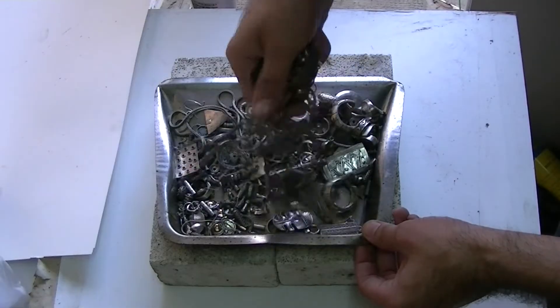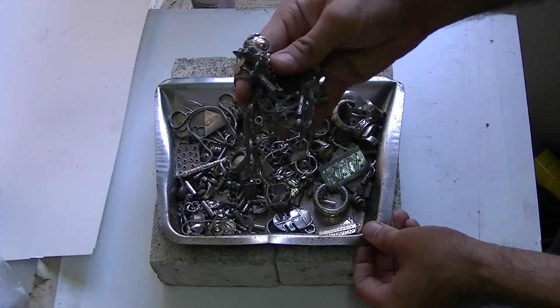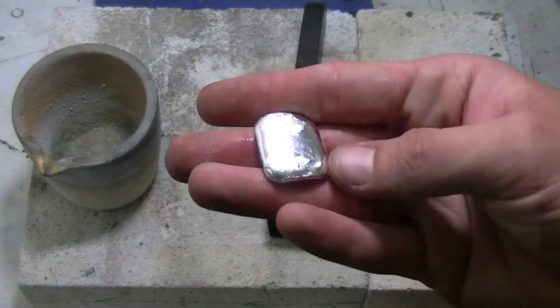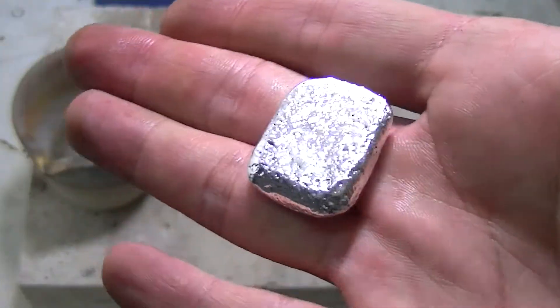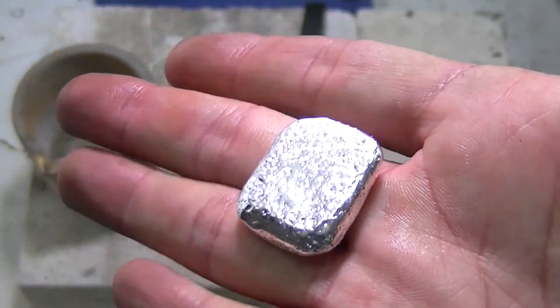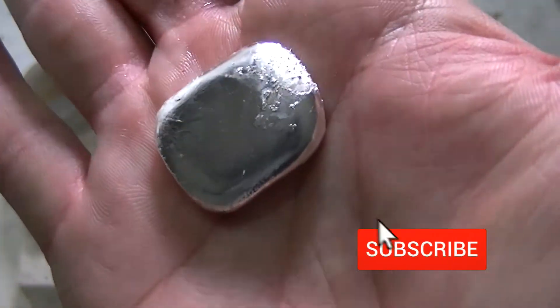Hi everybody, in this video I'm going to show you how to turn this old sterling silver scrap into fine shiny silver by refining it through the silver chloride method. Before we continue, don't forget to click the subscribe button and hit the notification bell.